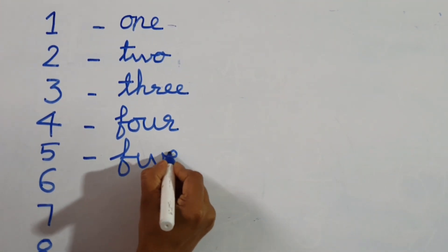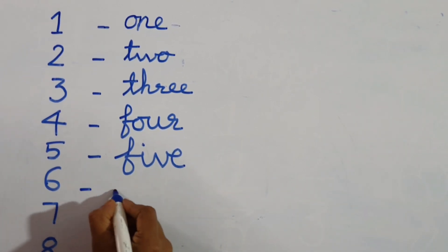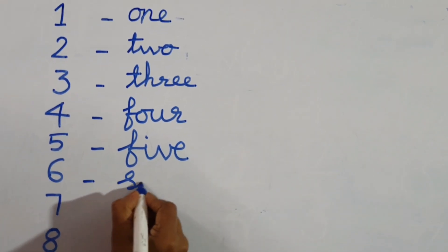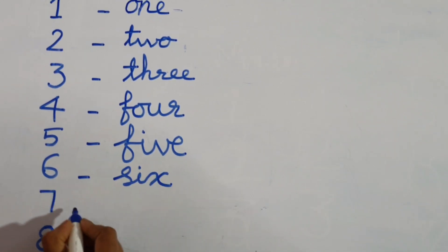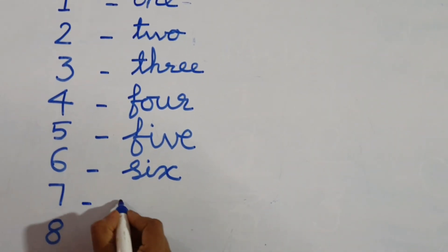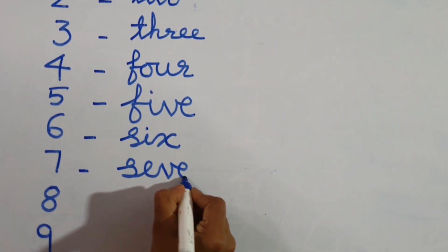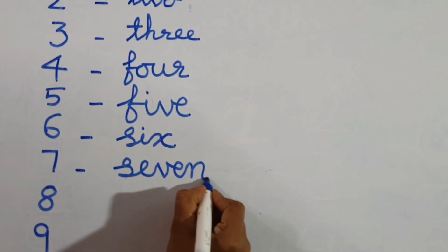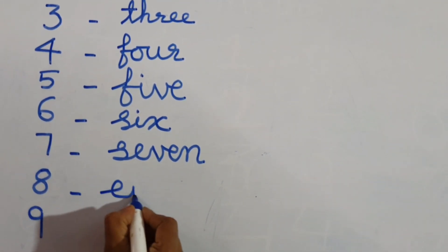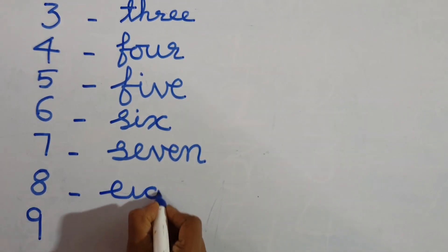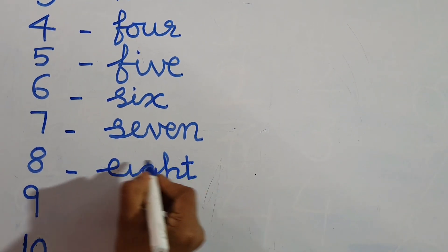T-W-O: two. T-H-R-E-E: three. F-O-U-R: four. F-I-V-E: five. S-I-X: six. S-E-V-E-N: seven. E-I-G-H-T: eight.